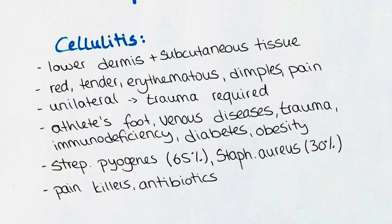Improper treatment or severe cases can lead to a series of complications. Necrotizing fasciitis, gas gangrene, or dissemination of the infection to other organs eventually leading to sepsis are just a few examples that indicate their severity.